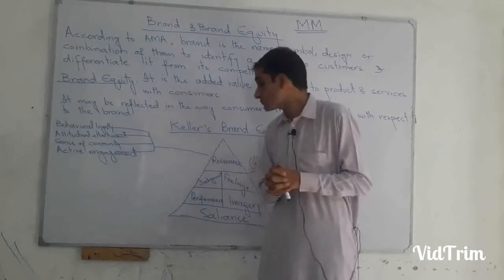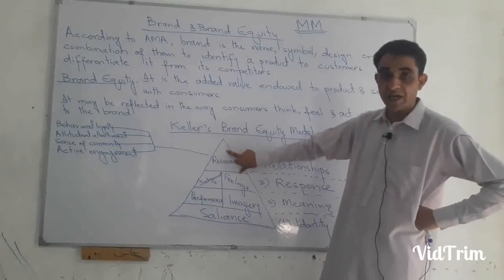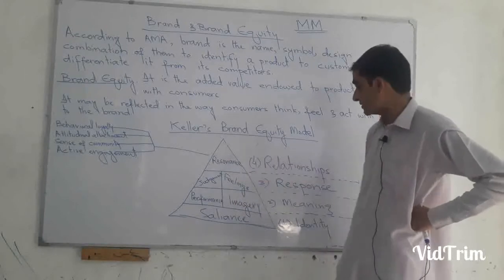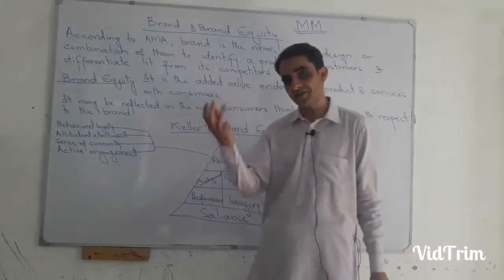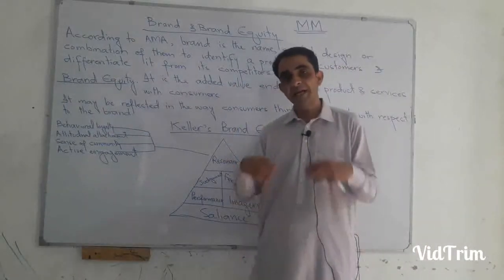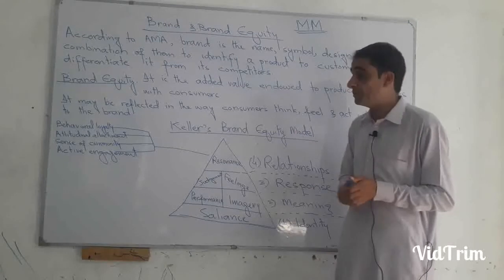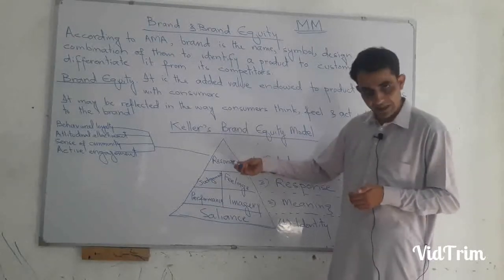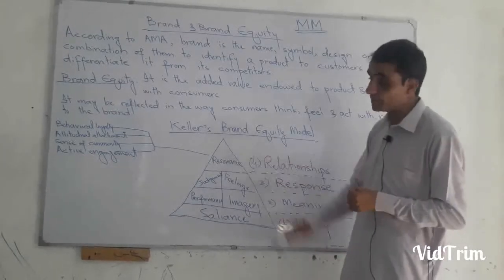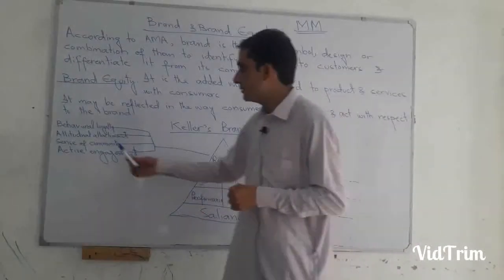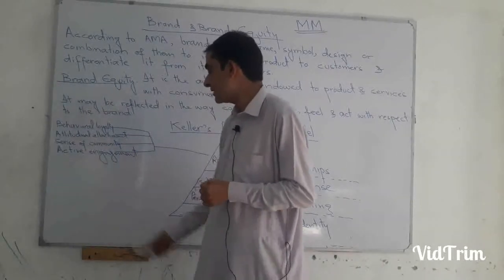Then the final and most successful stage will arise — resonance. Resonance means attachment of your product with the customers, or we can say brand association — the relationship of the product with the customer. If you have reached the resonance stage of the brand equity model, then resonance means four things: behavioral loyalty, attitudinal attachment, sense of community, and active engagement.